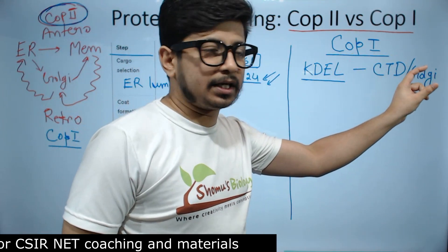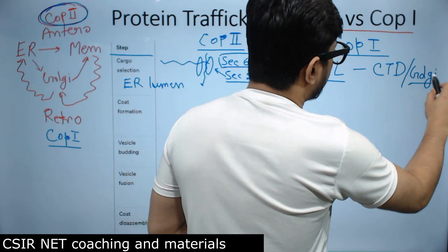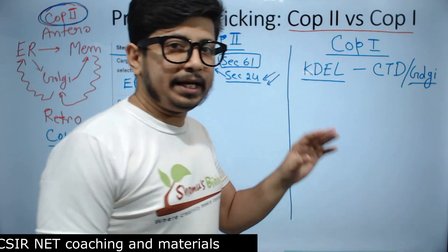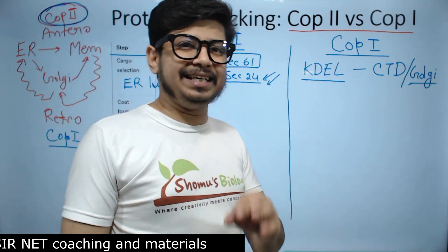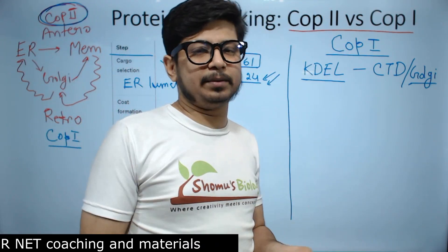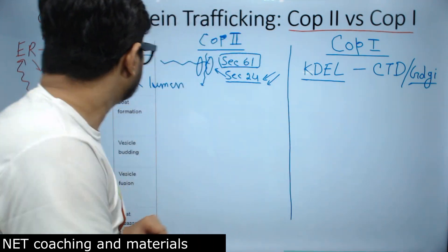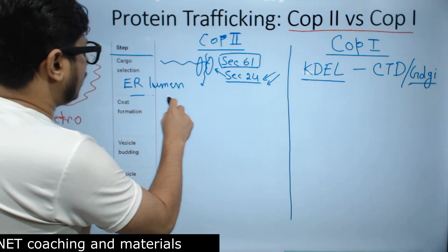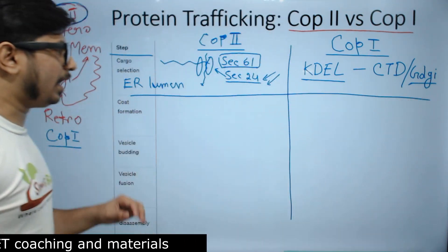In COP1-mediated transport, the journey begins in the Golgi apparatus. If the protein has KDEL in the C-terminal site, that is the signal for retention — that is the first part that distinguishes the two pathways. Now we move to the next part: coat formation.